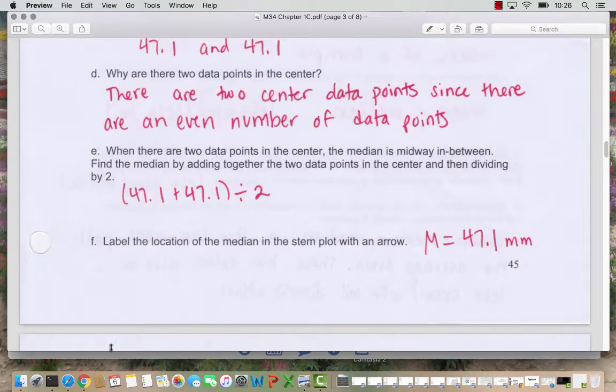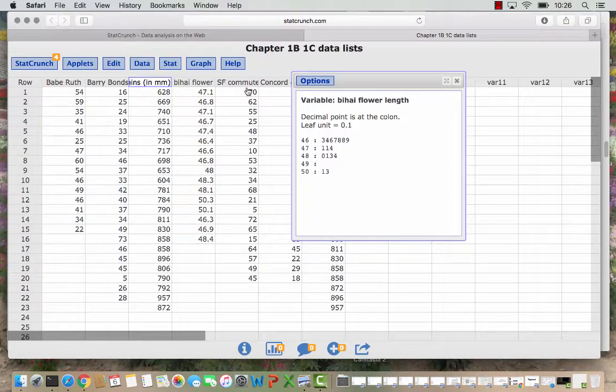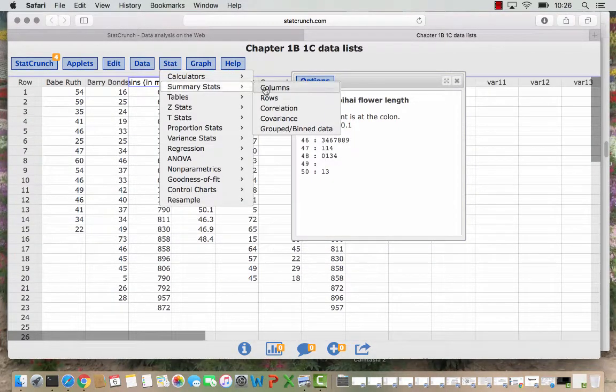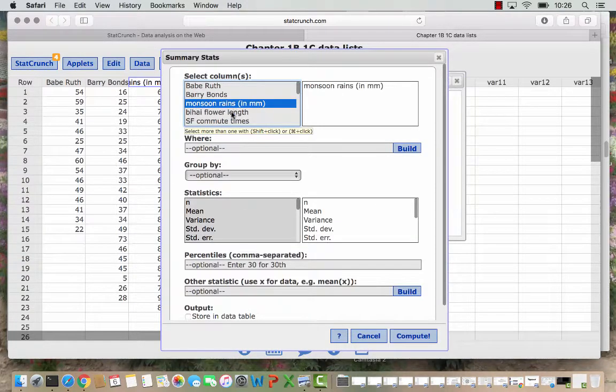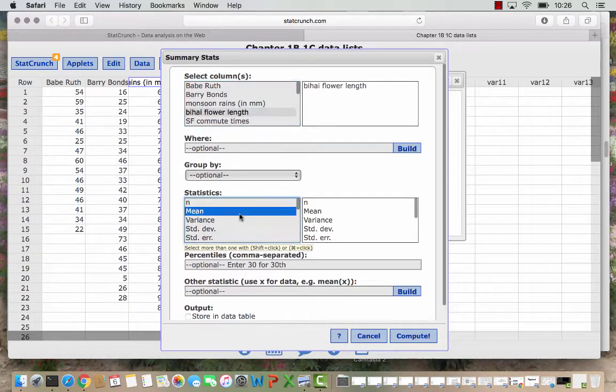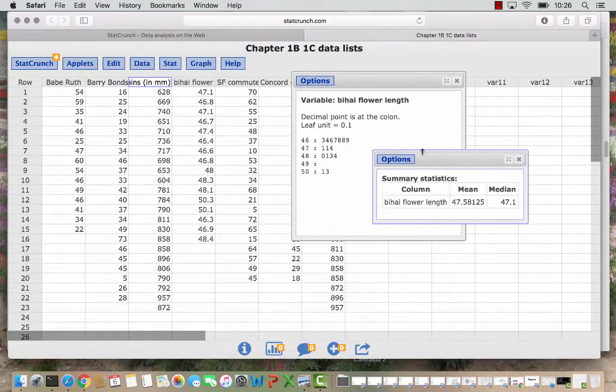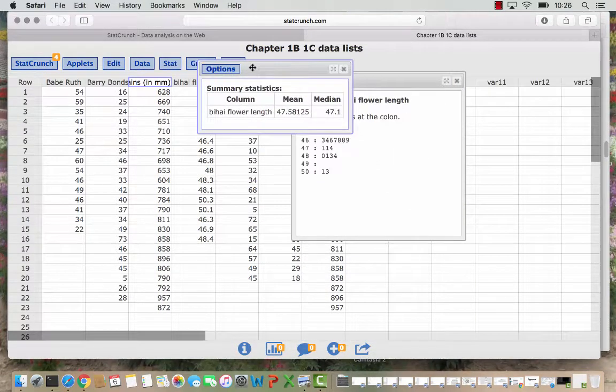If we wanted to compare that to the mean we could go back into StatCrunch and we could go Summary Stats column. Choose Beehive Flower Length. And then I can hold down Mean and then hold down Command or Control if you're on a Mac or a PC. And also select the median. And here we see our median is the 47.1 that we calculated and our mean is a little bit higher 47.58.